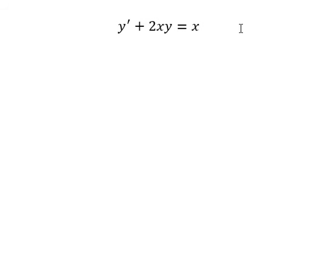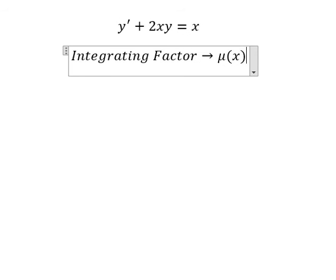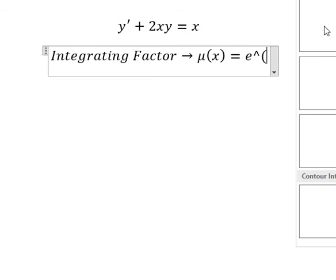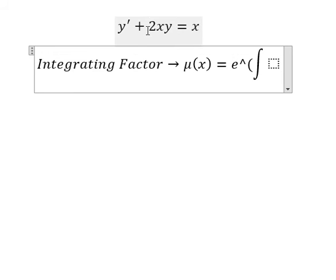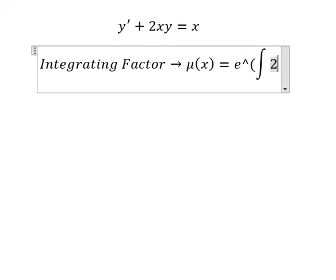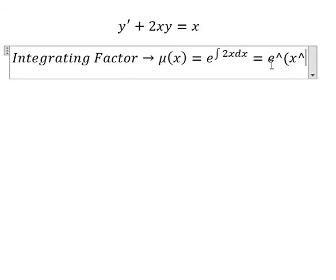So we need to find μ(x) equals to e to the power of the integral. So we have 2x next to y, that is for integrating factor, and we have positive in here and we have x squared. That means we multiply both sides by this one.